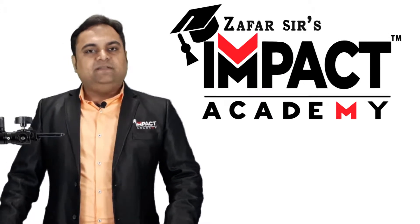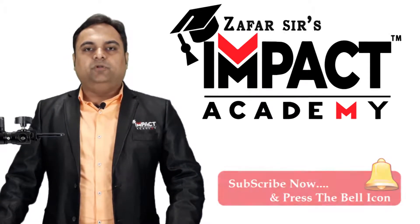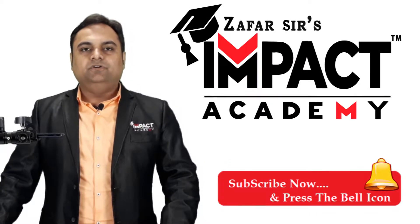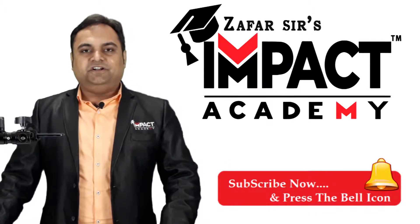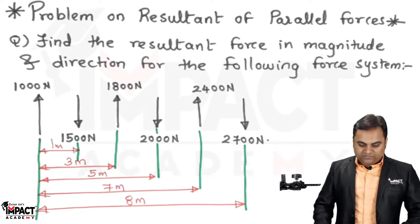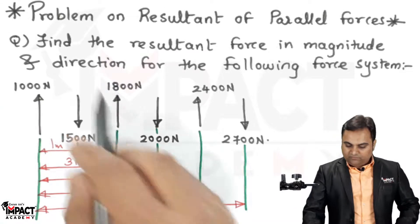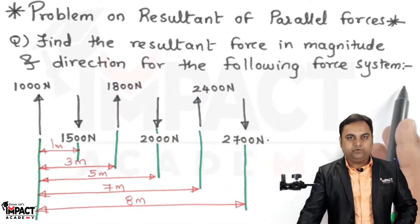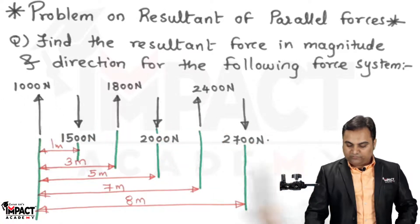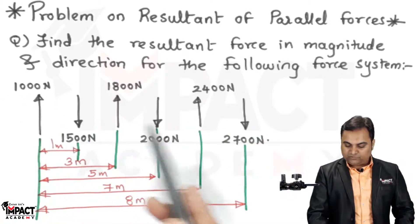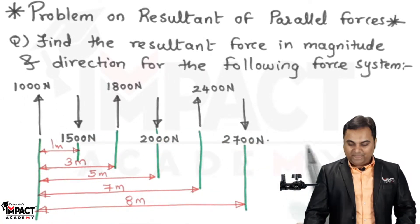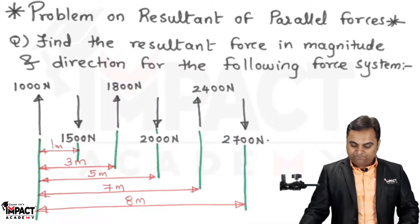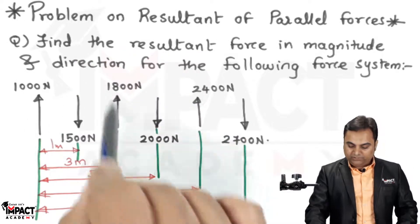Hi friends, in this video I will be explaining the problem on resultant for a parallel force system. Here is the question: find the resultant force in magnitude and direction for the following force system. As we can see, all the forces are parallel but their senses are different. For example, 1000 Newton is acting upward, 1500 Newton acting downward.